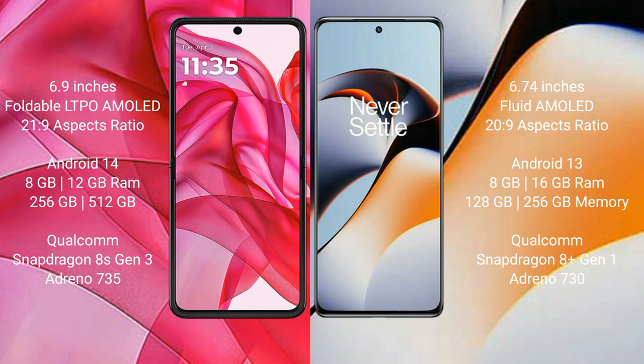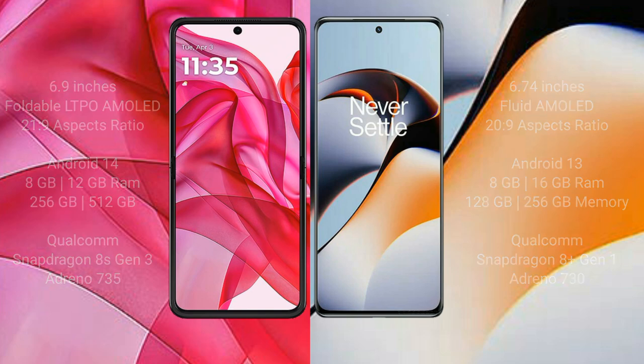Motorola Razr 50 Ultra features the Snapdragon 8s Gen 3 processor with Adreno 735 GPU. OnePlus 11R comes with 8GB, 16GB, or 18GB RAM and 128GB, 256GB, or 512GB storage, powered by the Snapdragon 8 Gen 1 processor with Adreno 730 GPU.